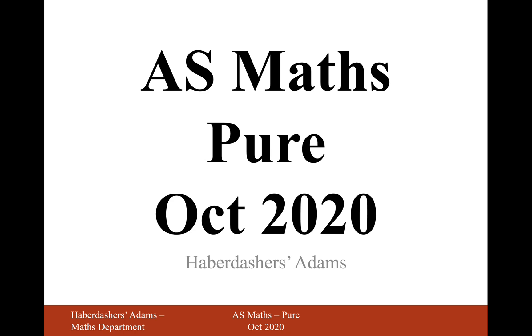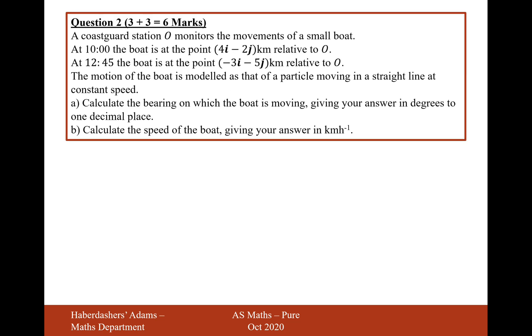Hello there, welcome to the October 2020 paper. Here we're looking at question 2. A Coast Guard station O monitors the movement of a small boat. At 10 o'clock the boat was at the point (4i - 2j) km relative to O. At 12:45 the boat was at the point (-3i - 5j) km relative to point O. The motion of the boat is modeled as that of a particle moving in a straight line at constant speed.